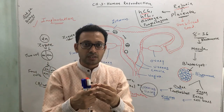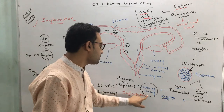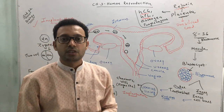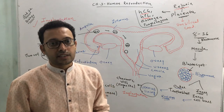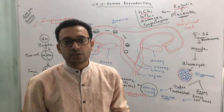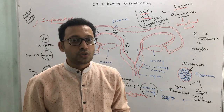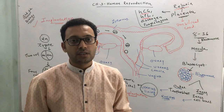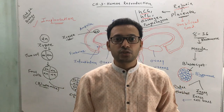To summarize today's session: we discussed three processes — fertilization (fusion of sperm and ovum), implantation (attachment of blastocyst or trophoblast to the wall of the uterus), and placentation (formation of placenta). Further details on embryonic development will be covered in the next session. Previous sessions covered male and female reproductive systems, spermatogenesis, oogenesis, and the menstrual cycle — prepare those thoroughly as they are important for examinations.